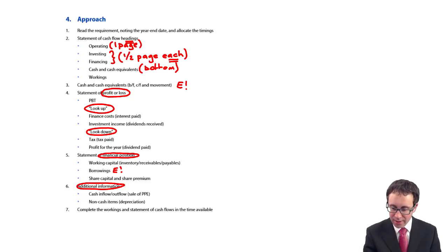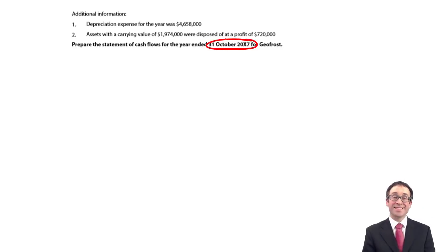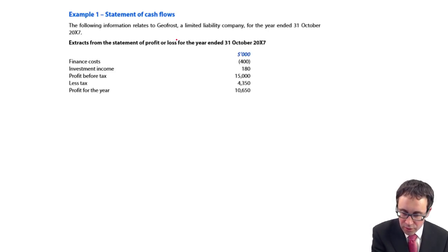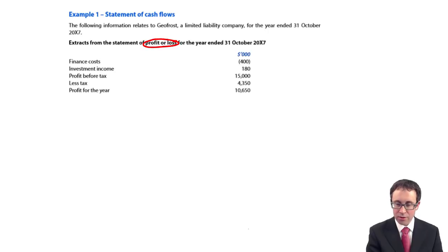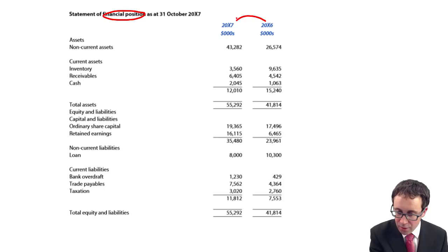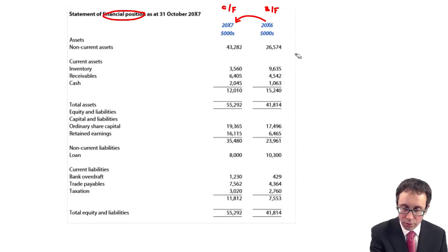Let's follow the approach: read the requirement noting the year end dates and allocate the timings. So we need to prepare the statements of cash flows for the year ended 31st of October 20X7 for this company, Geofrost. You've got the statement of profit or loss and the statement of financial position, going from right to left — brought forward balances on the right, carry forward on the left.